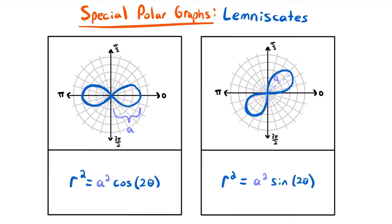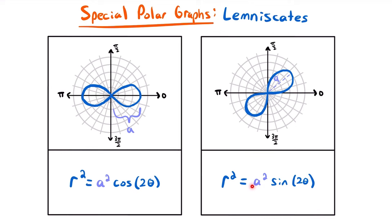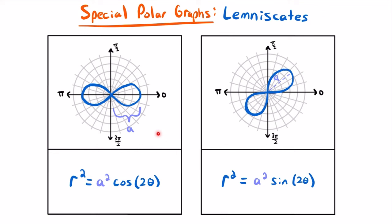If the constant a squared in front of cosine of 2 theta or sine of 2 theta is negative, you need to rotate your graph 180 degrees — reflecting it about the pole or origin. For cosine, instead of an infinity sign along the polar axis, it would be rotated to be about the vertical axis. For sine, you similarly rotate 180 degrees.